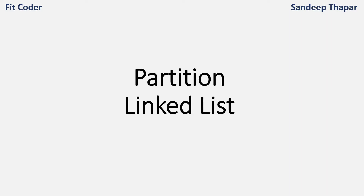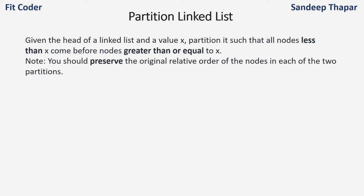In this video we will discuss how to partition a linked list based on a given value. We are given the head of a linked list and a value x. We need to partition the linked list such that all nodes which are less than x come before nodes greater than or equal to x, while preserving the original relative order of the nodes in each of the two partitions.